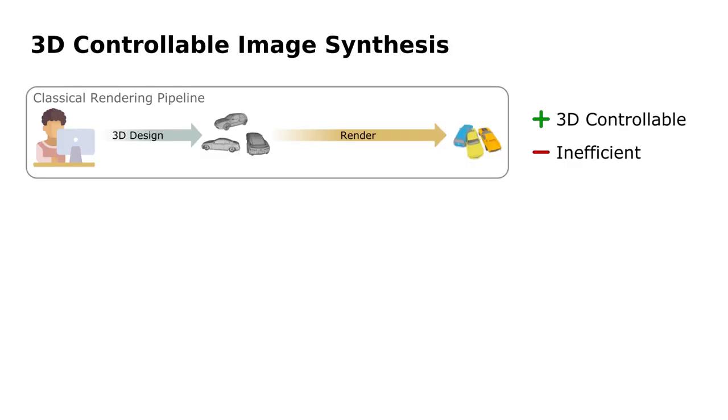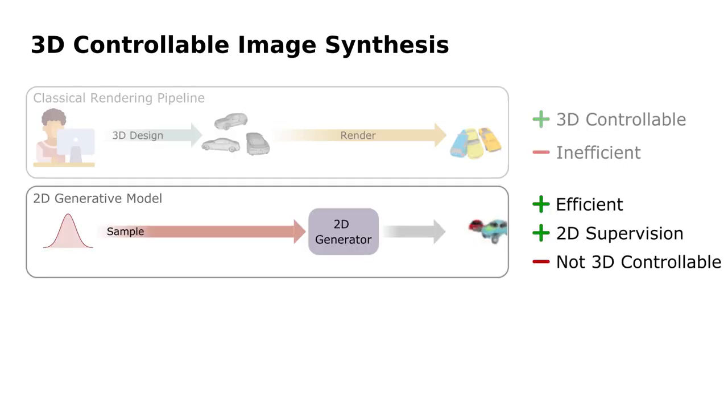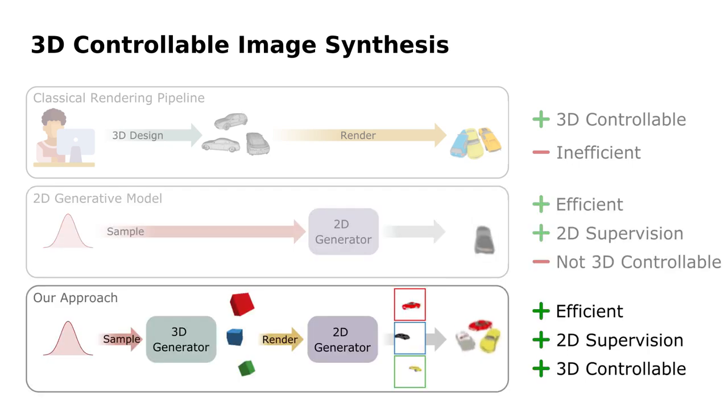Classical rendering is fully 3D controllable, but it is inefficient and expensive to manually create 3D models. In contrast, 2D generative models are efficient and can be learned from 2D images only, but they are not 3D controllable. In this work, we aim for combining the advantages of these two pipelines.